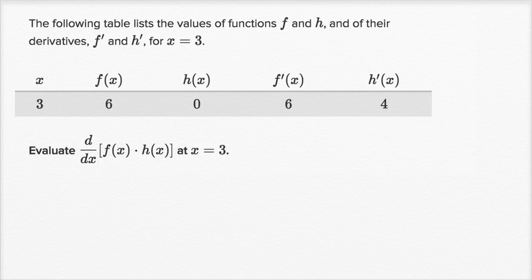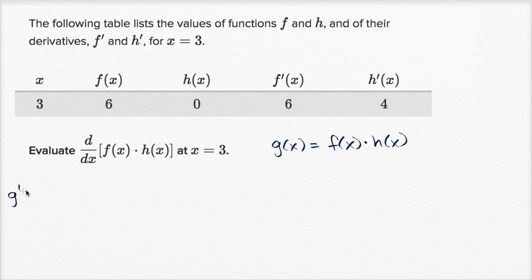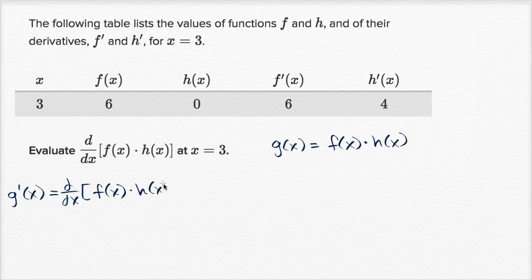One way to view this is: if we define some function g of x as being equal to the product of f of x and h of x, then this expression is the derivative of g of x. So we could write g prime of x as equal to the derivative with respect to x of f of x times h of x, which is what we want to evaluate at x equals three — we essentially want to evaluate g prime of three.